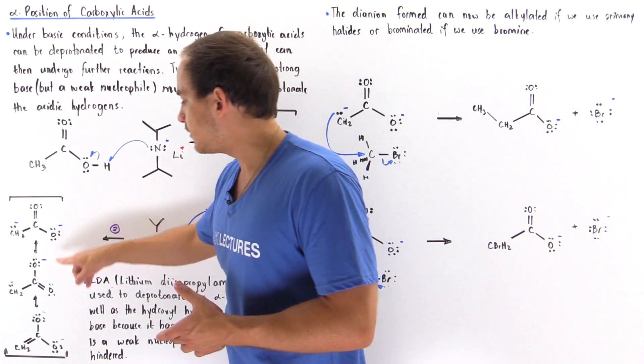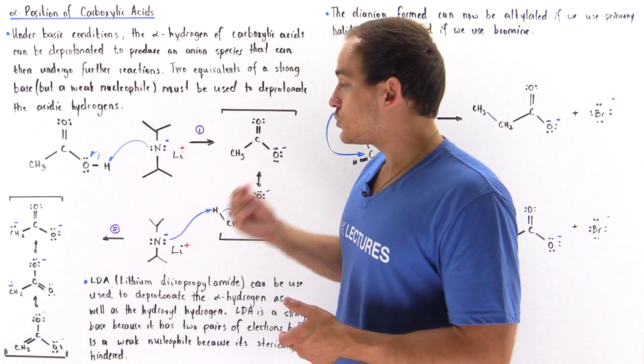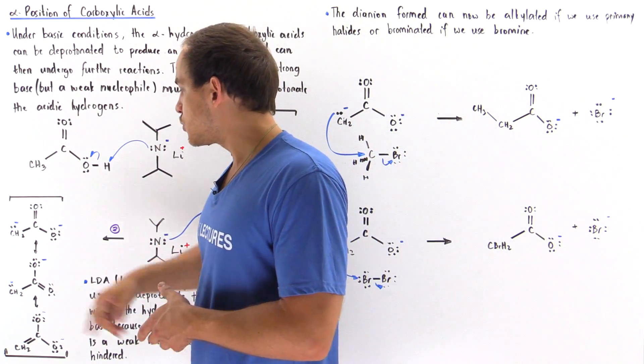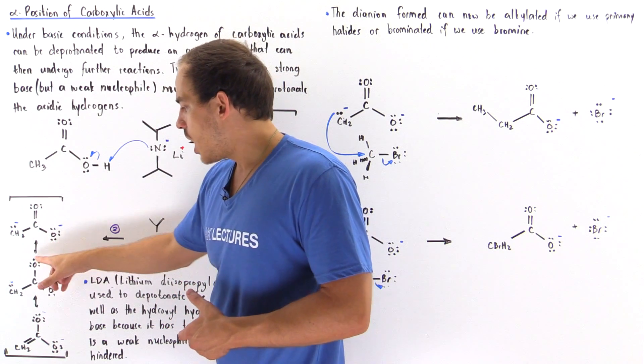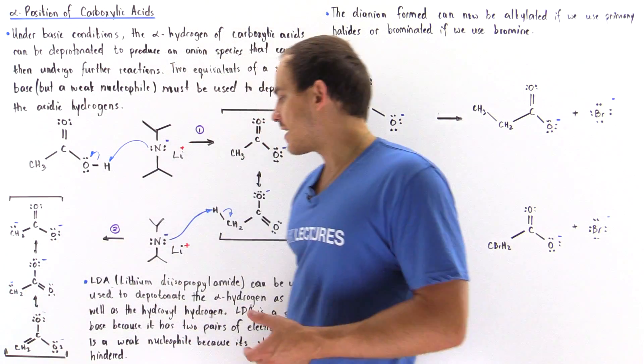An anion that contains two full negative charges on two different atoms. So we basically have the delocalization of negative charge among these three atoms as shown.